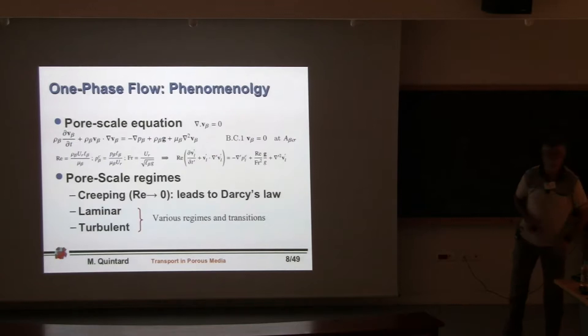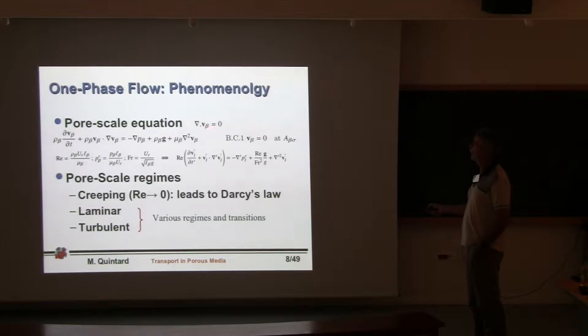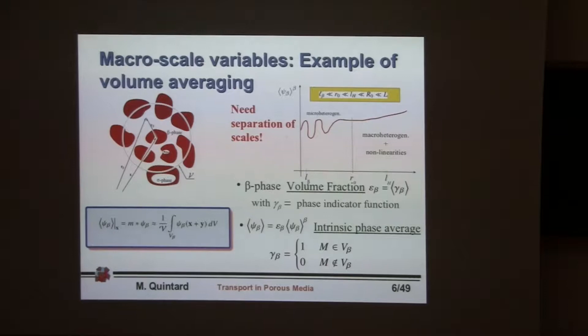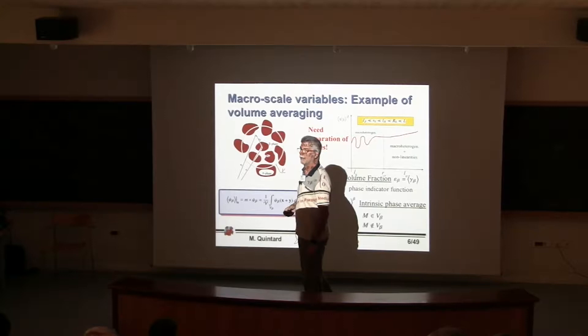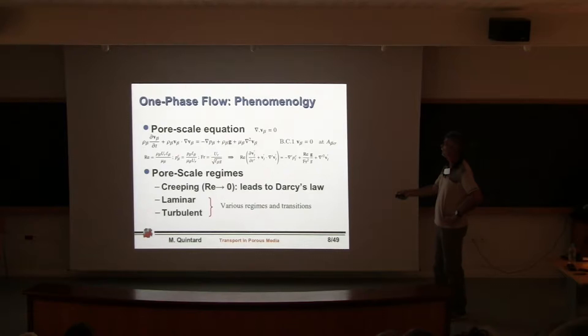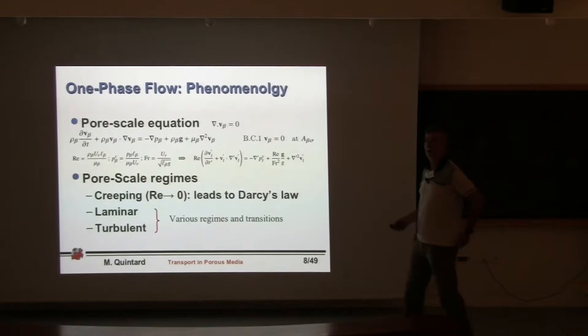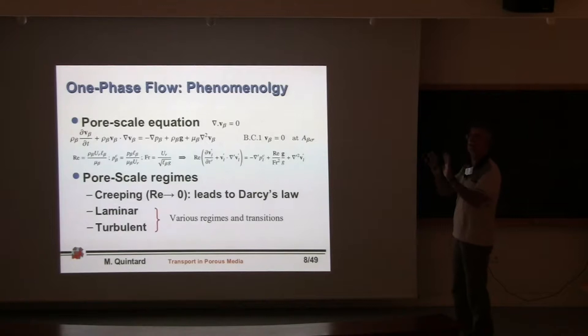A student asks about the beta notation. Beta is simply the beta phase — it is the fluid phase, while sigma is the solid phase. When beta appears as a superscript in parentheses, this is the notation for the intrinsic phase average: you are integrating only over the beta phase and dividing by the volume of the beta phase. A constant value thus gives exactly that constant. Another question concerns the characteristic length L in the Reynolds number — the small l is the pore-scale characteristic length. There are many different choices and this has created furious debates in the literature; it is characteristic of the small scale, the pore scale.